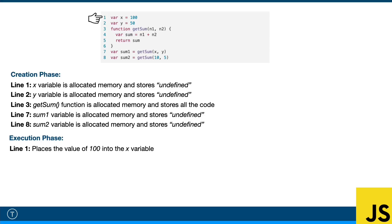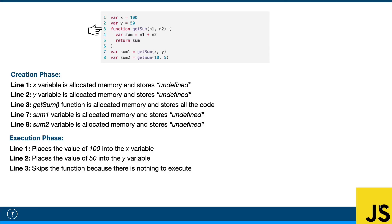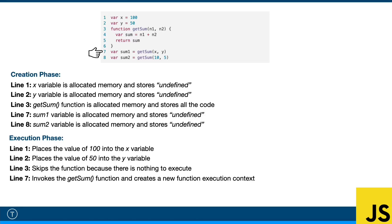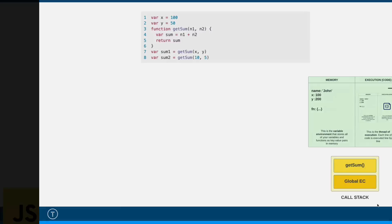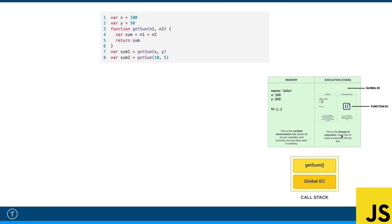Now the execution phase starts. It goes back to line one and places the value 100 into x. On line two it places 50 into y. When it gets to line three it skips the function definition because there's nothing to execute. But when it gets to line seven, it invokes the getSum function. Remember, whenever we invoke a function it creates a new function execution context. So we now have our global execution context with a function execution context inside it, and at this point getSum is on the call stack.